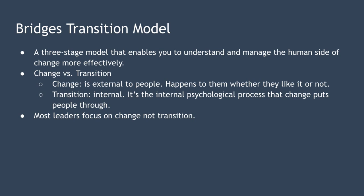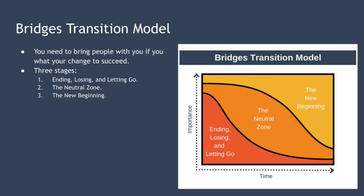A transition occurs in the course of every attempt to change. Unfortunately, most leaders concentrate on change and assume that transition will happen simply because the change is happening. This, however, isn't the case. Change can happen very quickly, whereas transition usually takes longer. The model is based on the idea that change will only be successful if employees are supported through the transition they experience during the change.